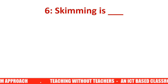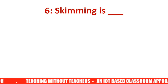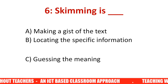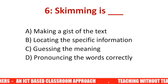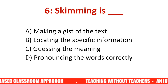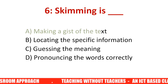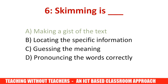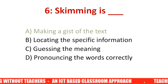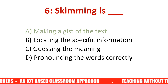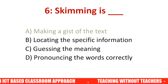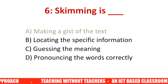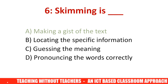Question number six: Another strategy is skimming. Skimming is dash. Options are: A) making a gist of the text, B) locating specific information, C) guessing the meaning, D) pronouncing the words correctly. The answer is A — making a gist of the text. While scanning is for finding specific information, skimming is for getting the overall gist. For example, when you quickly read a newspaper story to get the general idea, that is skimming.